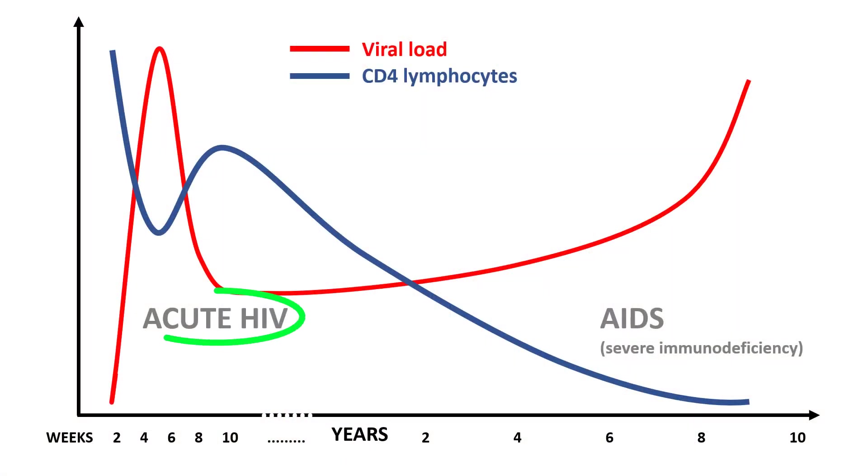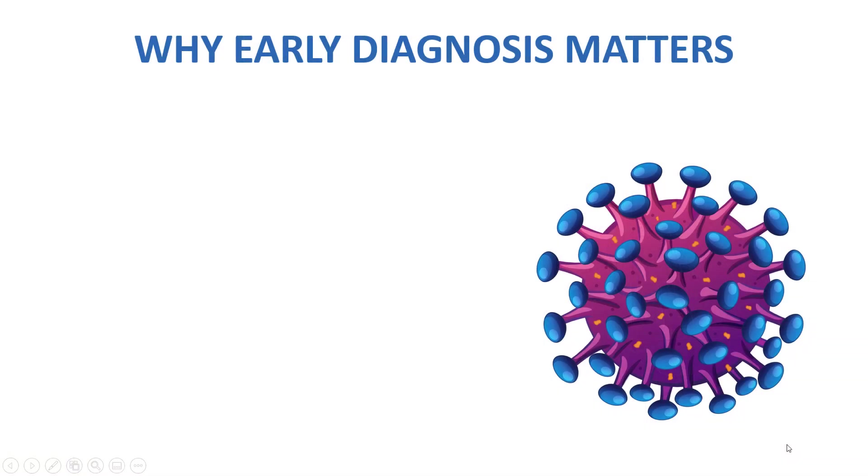So wouldn't it be great if we were able to diagnose HIV right in the beginning, shortly after the patient gets infected? And this is the topic of today's lecture: how to recognize acute HIV infection, or acute retroviral syndrome.